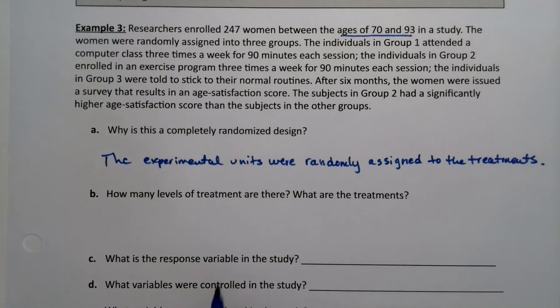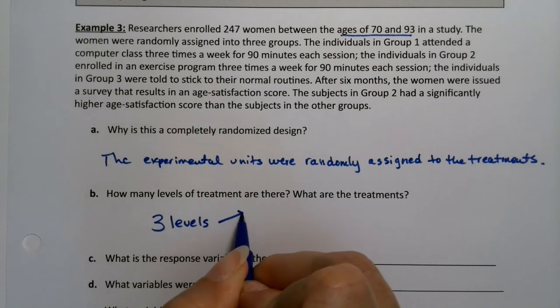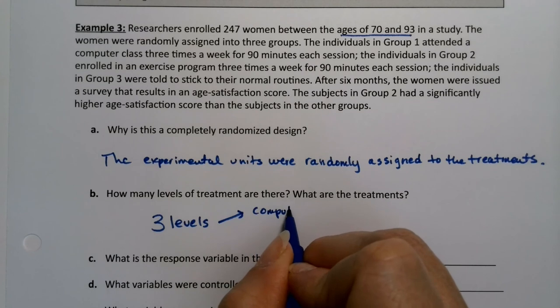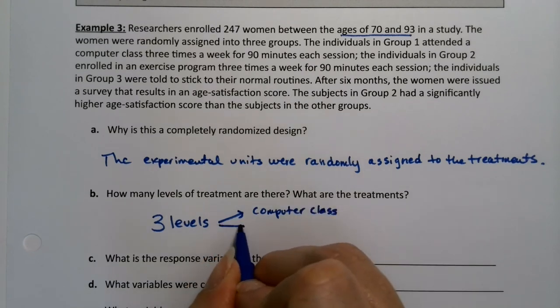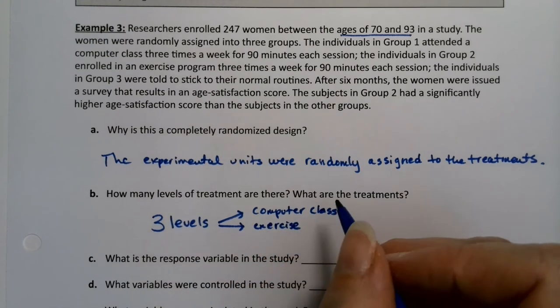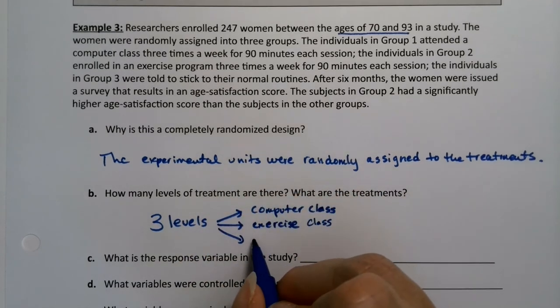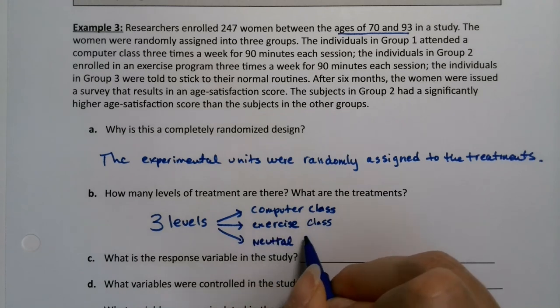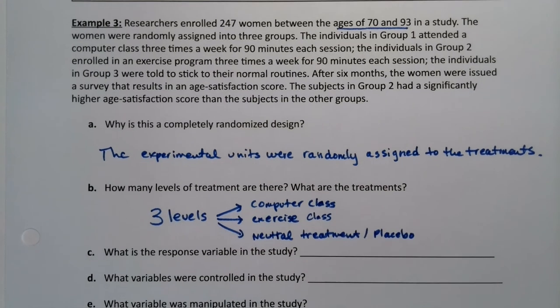How many levels of treatment are there and what are there? Well, there were three levels. They were the computer class, the exercise class, and quite frankly, the placebo group, the control group. So the neutral treatment. Which was the placebo, just doing your normal everyday thing.